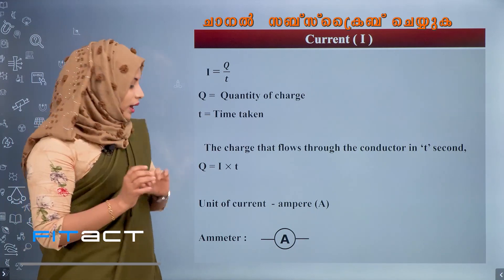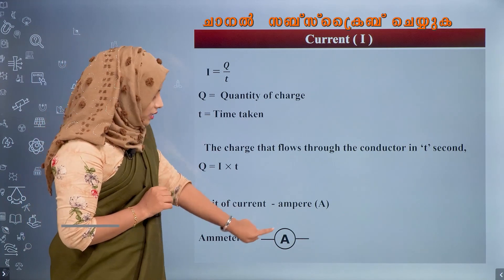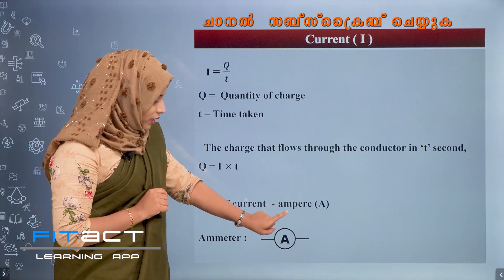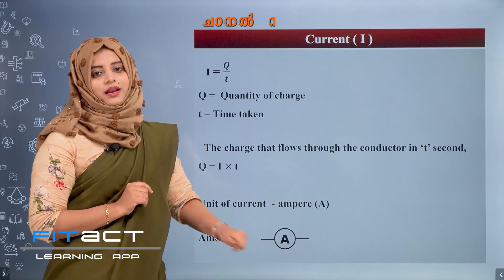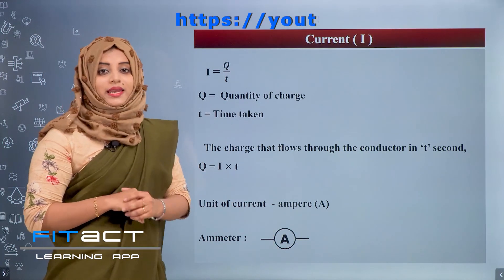The device used to measure current in a circuit is the Ammeter. In a circuit, the Ammeter is indicated using a specific symbol.